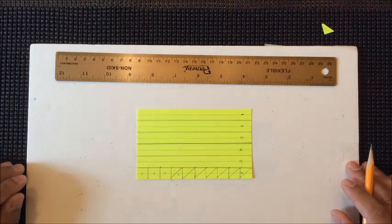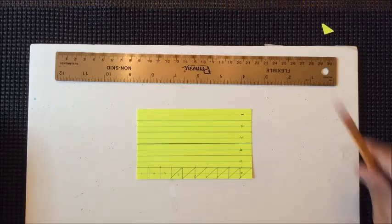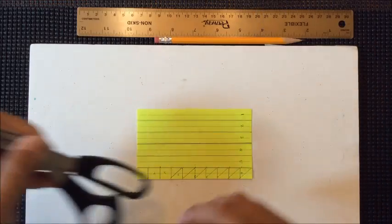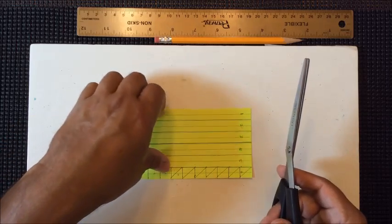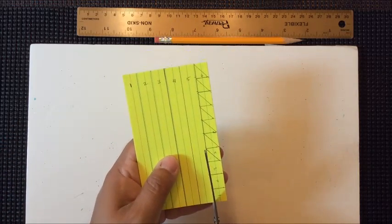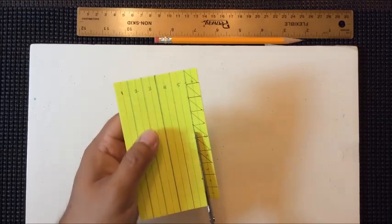The next thing we want to do is we want to cut these out. So now we are finished with the pencil and the ruler. And what we need now is our scissors. You are going to take the scissors and we are going to cut out those six strips.